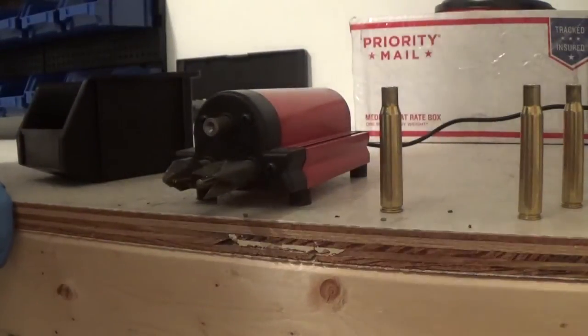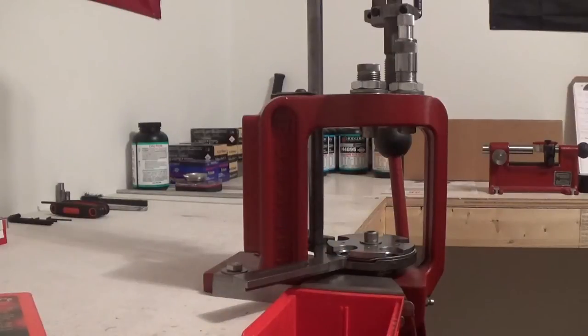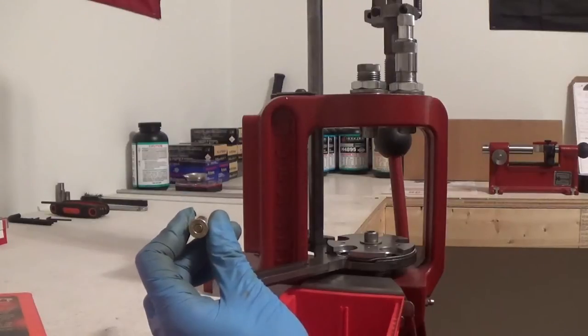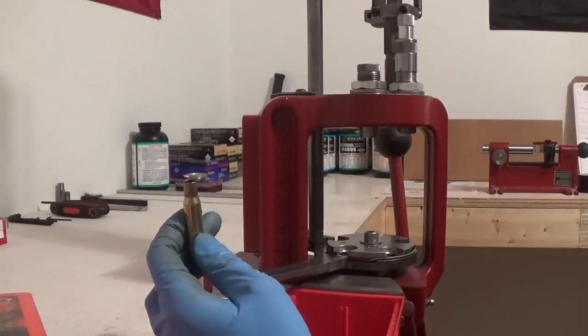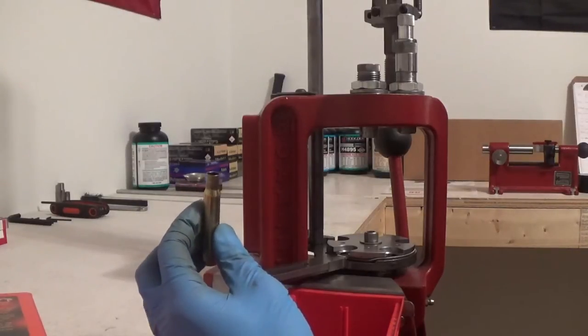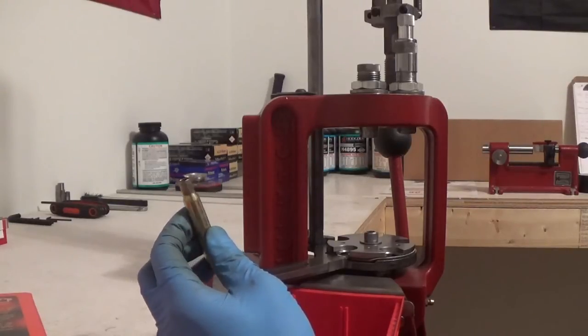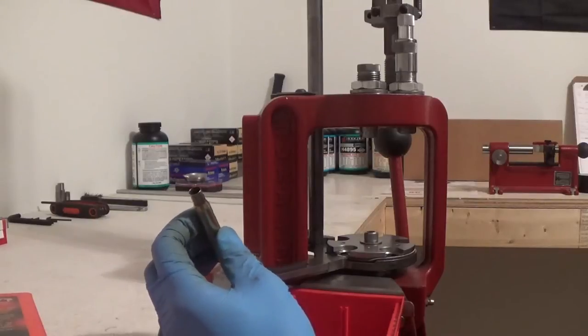All right, next step. We're going to head over to the press and we're going to get ready to load. Okay, so now we're back over here at the press. Our brass has been resized, deprimed, then we've reprimed it, then we trimmed it and chamfered and deburred it, and now we're ready to load. All right, got my powder throw set up to where I'm getting the correct charge, and now all I got to do is set up my bullet seating depth and we'll be ready to rock and roll.